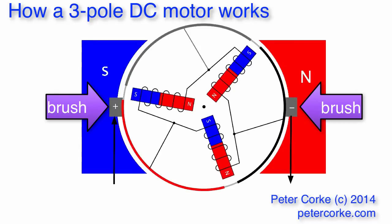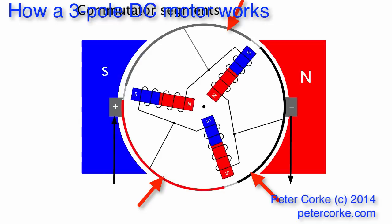These elements here are called brushes and they transmit the power from the stationary part of the motor to the rotary part of the motor. They rub on these circular arcs which are called commutator segments. So there's quite an amount of friction involved in getting power from the stationary part of the motor into the rotating part.